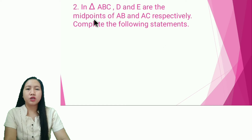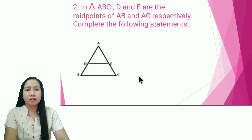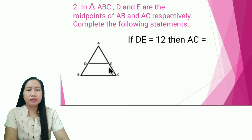Number two: in triangle ABC, D and E are the midpoints of line segment AB and AC respectively. Complete the following statements. Number one: if line segment DE is equal to 12, then line segment AC is equal to — the answer is 24.